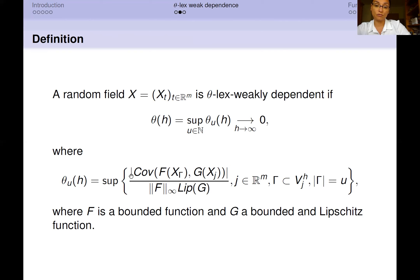The covariance between the function F applied on the marginal identified by the set Γ and the function G computed on X_j, where F and G are respectively a bounded function and a bounded and Lipschitz function.